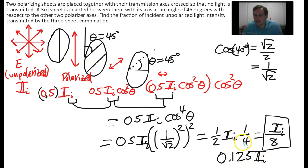And that's like 12.5 percent of the unpolarized intensity. So notice we lose half here, and then we lose another cosine squared which is another half, so that's 0.25, and then we lose another half. So that's 0.125 or one eighth. So I hope that makes sense. This is how polarizing filters work.